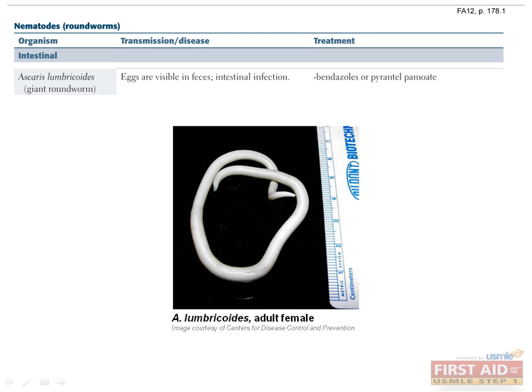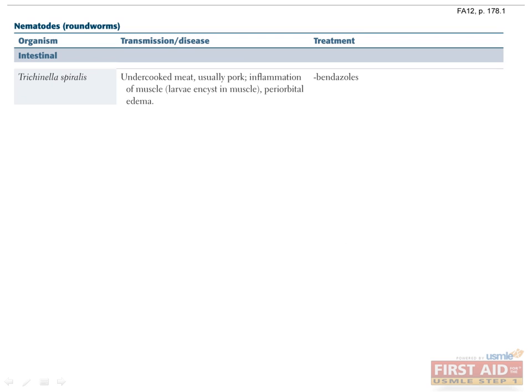Ascaris lumbricoides is also known as a giant roundworm because it can grow to be 13 inches long. It is the most common helminthic infection in the world, especially in tropical areas where poor sanitation is frequent. Transmission is fecal-oral via ingestion of eggs from contaminated soil. The eggs hatch in the digestive tract and larvae penetrate the intestinal wall, causing an intestinal infection with diarrhea, vomiting, and nausea.